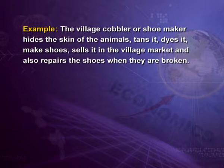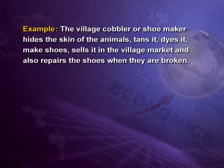Agriculture is a seasonal occupation and most laborers and marginal farmers migrate to cities and towns to earn their living during the off-season. It becomes a problem whether to include their activity in the agriculture sector or in the non-agriculture sector. Besides, in rural India, a worker may be engaged in a variety of activities. For example, a village cobbler hides the skin of animals, tans it, dyes it, makes shoes, sells them in the village market, and also repairs shoes — making it difficult to estimate his correct income in the correct category. These were the conceptual problems.